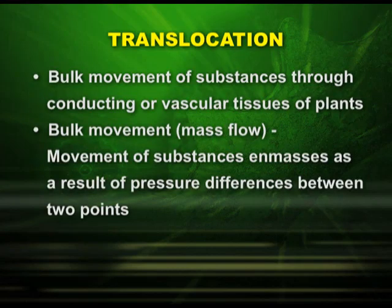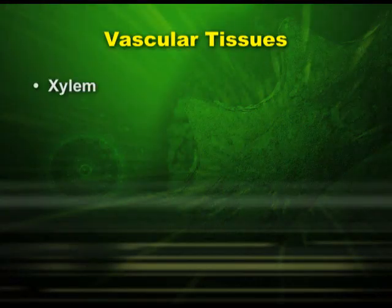Let us see what bulk movement is. Bulk movement is the movement of substances in mass as a result of pressure differences between two points. Now let us see how bulk transport takes place — it takes place through two vascular tissues: xylem and phloem.